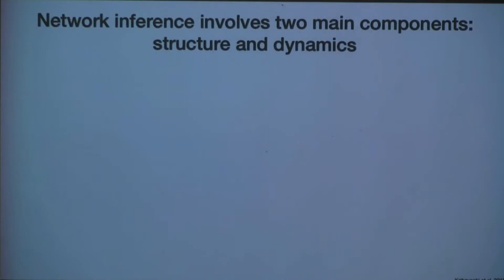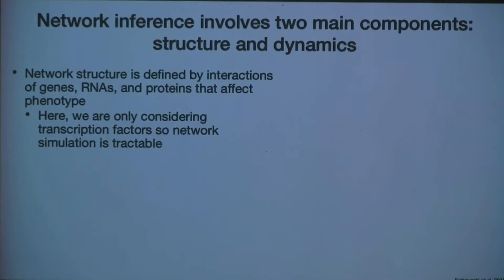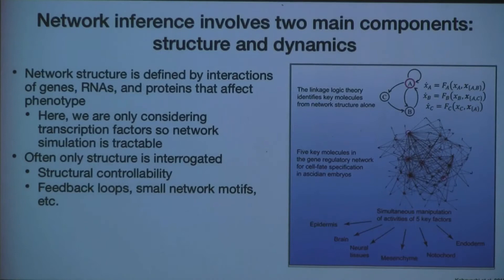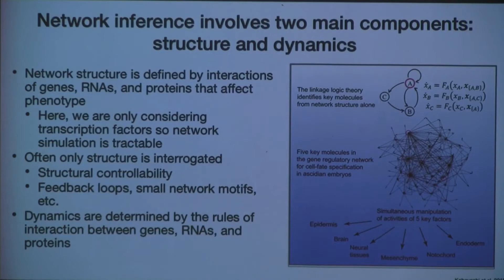Network inference involves two main components: structure and dynamics. Structure is defined by the interactions between nodes — here we only consider transcription factors to keep the network small enough to simulate. From structure alone you can examine structural controllability and network motifs like feedback loops. The second component, dynamics, is determined by the rules of interaction between nodes, which is what we developed BooleanBayes to do — and this part requires data to actually fit parameters.